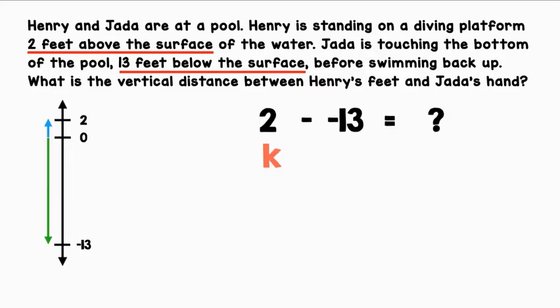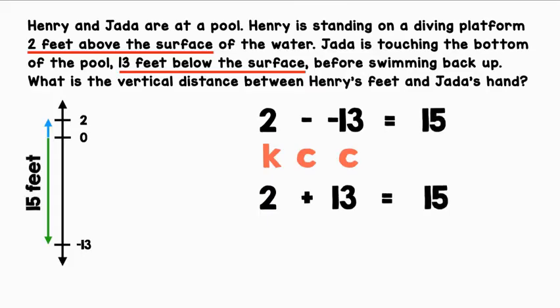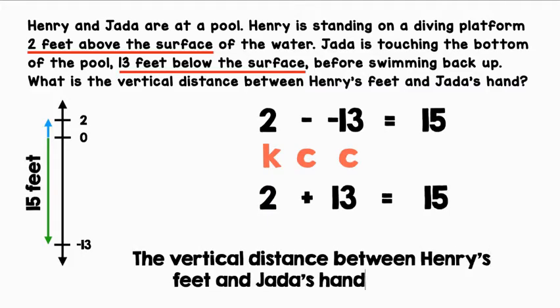Let's keep the 2, change subtraction to addition, and change negative 13 to positive 13. 2 plus 13 equals 15. The vertical distance between Henry's feet and Jada's hand is 15 feet.